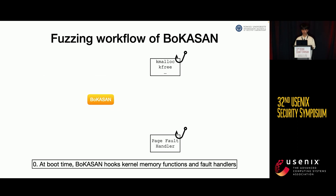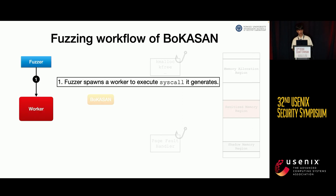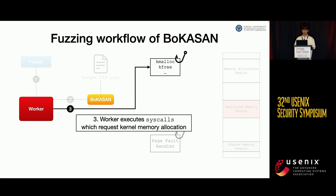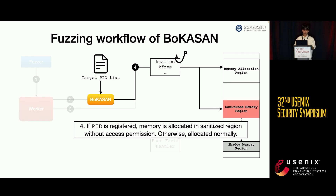First, BokaSAN is loaded as a kernel module during kernel boot, and it hooks the page fault handler and memory-related functions when loaded. Afterwards, the fuzzer is executed and spawns a worker. The worker will execute the random system calls made by the fuzzer. When the worker is spawned, it informs its PID to BokaSAN. BokaSAN records the worker's PID in its PID list. Then the worker executes random system calls. When a system call requests memory allocation, BokaSAN detects the request. It checks whether the process requesting memory allocation is on the PID list. If it is, it places the memory in BokaSAN's allocation area without access permission. If not, it proceeds with regular memory allocation.